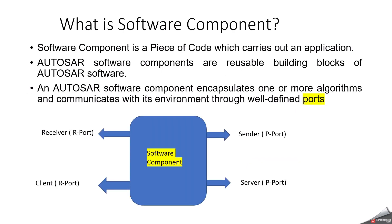What is a software component? A software component is a piece of code which carries out an application. We also call them atomic software components. An application can be anything — controlling a door, reading engine speed, dealing with mileage, or anything else. You can write a piece of code that can be called a software component in the AUTOSAR world. AUTOSAR software components are reusable building blocks, meaning you can reuse your software component in multiple ECUs without redeveloping again and again.